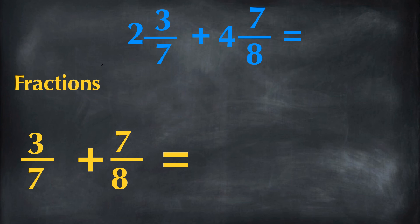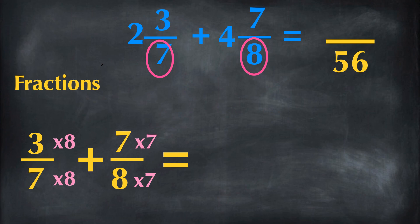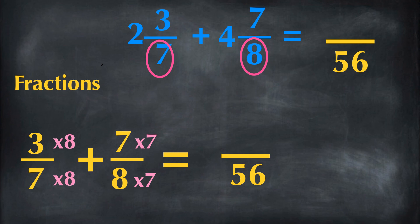We need to make the denominator the same as 56. Since we multiply the bottom by 8 in the first fraction, we need to multiply the top number by 8 as well. Also we need to multiply the bottom by 7 in the second fraction, and multiply the top number by 7 as well. The denominator is 56, and the numerators should be added. 3 times 8 is 24.